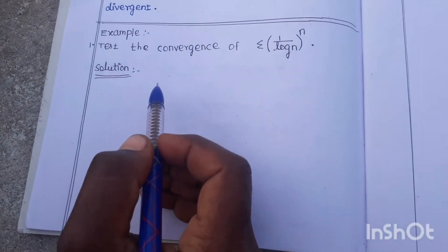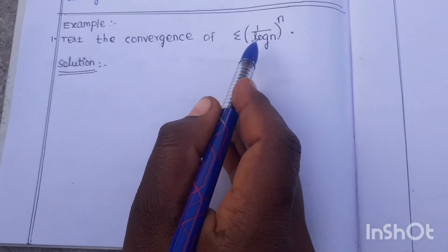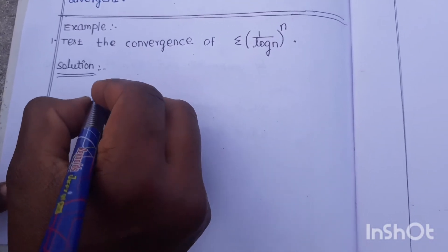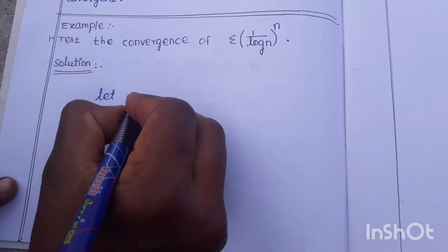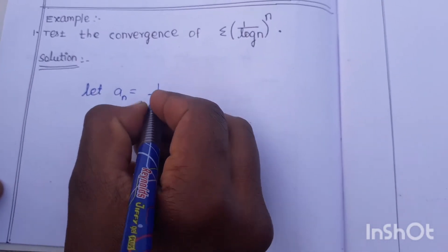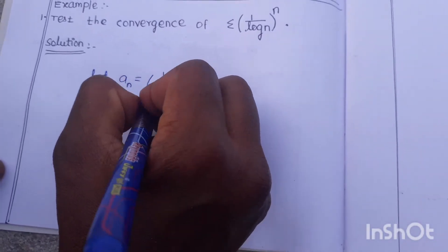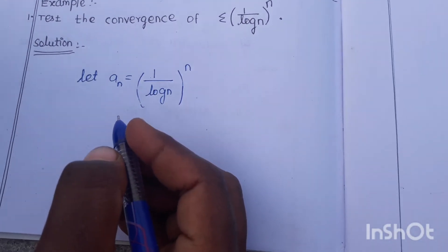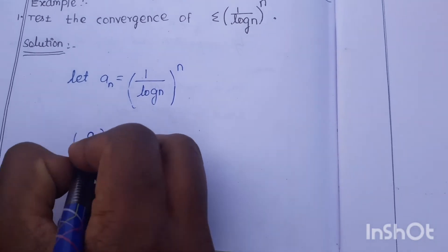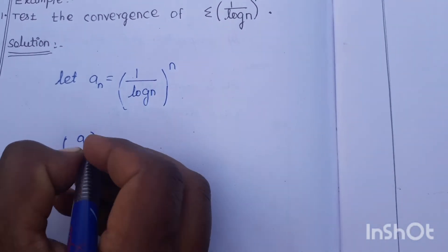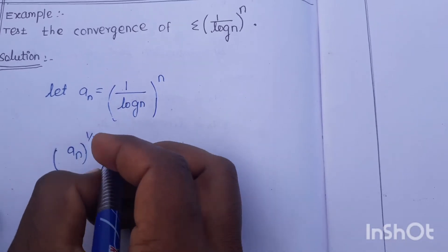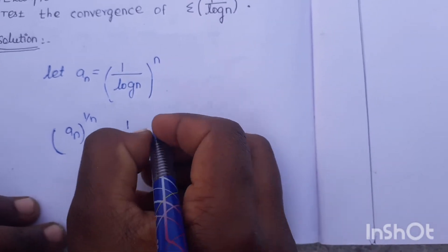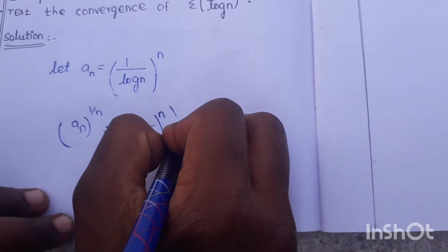Example: Test the convergence of sigma (1/log n)^n. This is sigma a_n. Let a_n = (1/log n)^n.